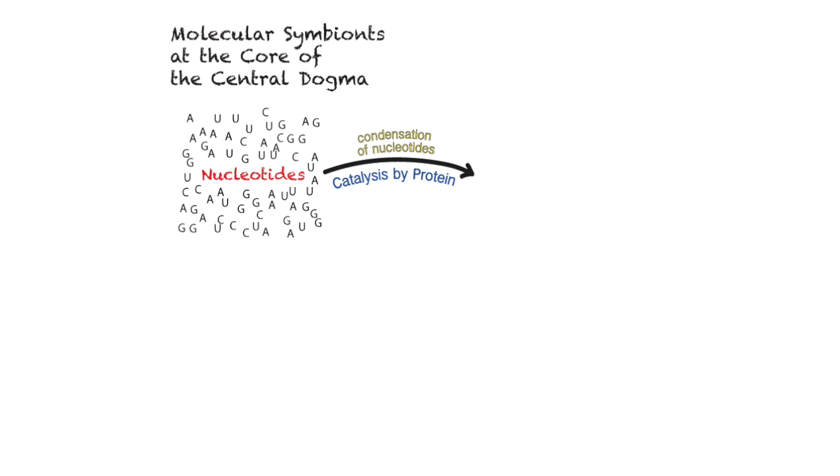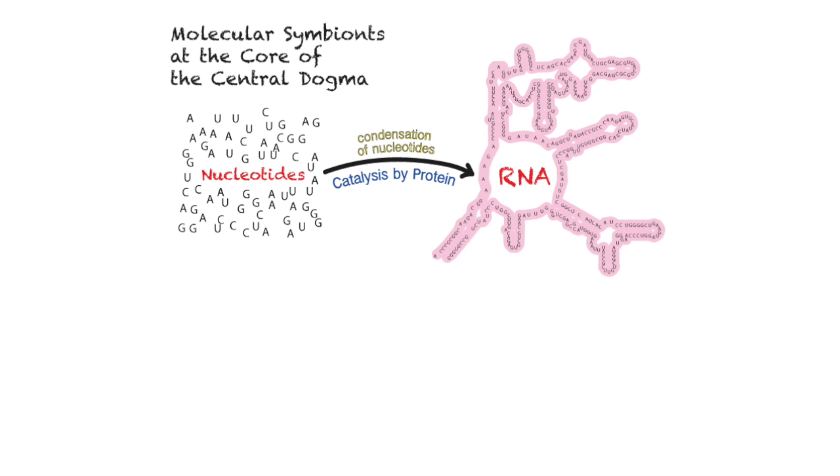RNA is synthesized by DNA. Biology contains what we call molecular symbionts. These are different types of polymers that rely entirely on one another. RNA is one type of molecular symbiont.